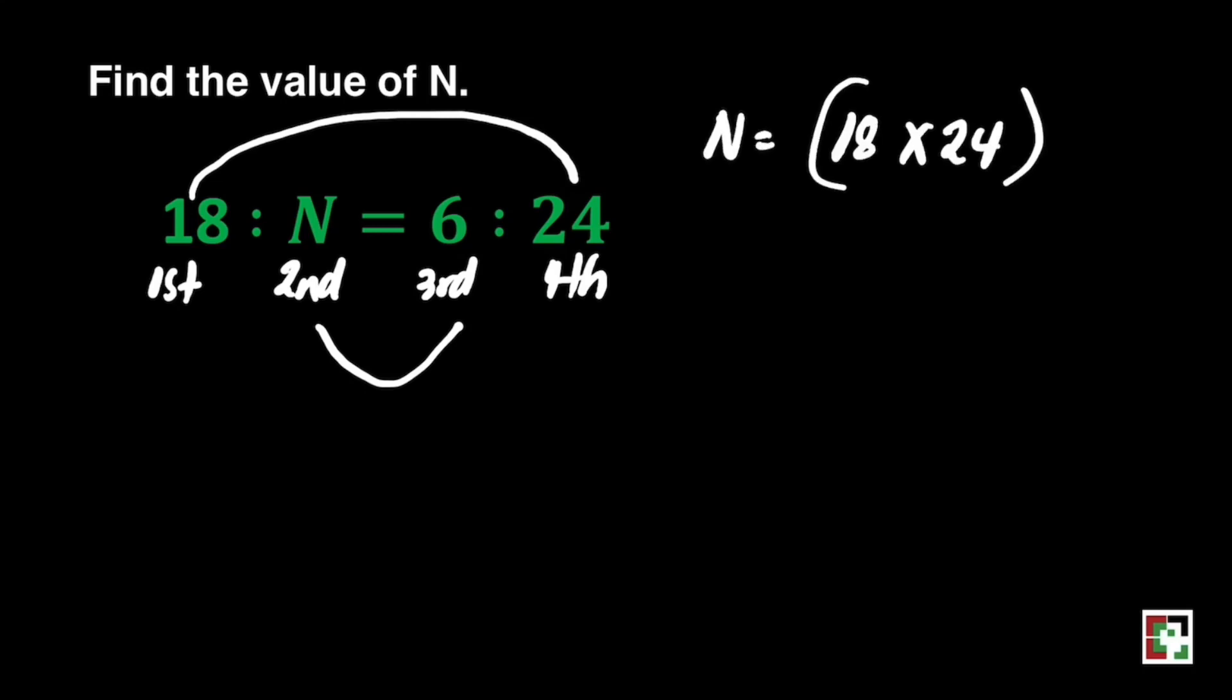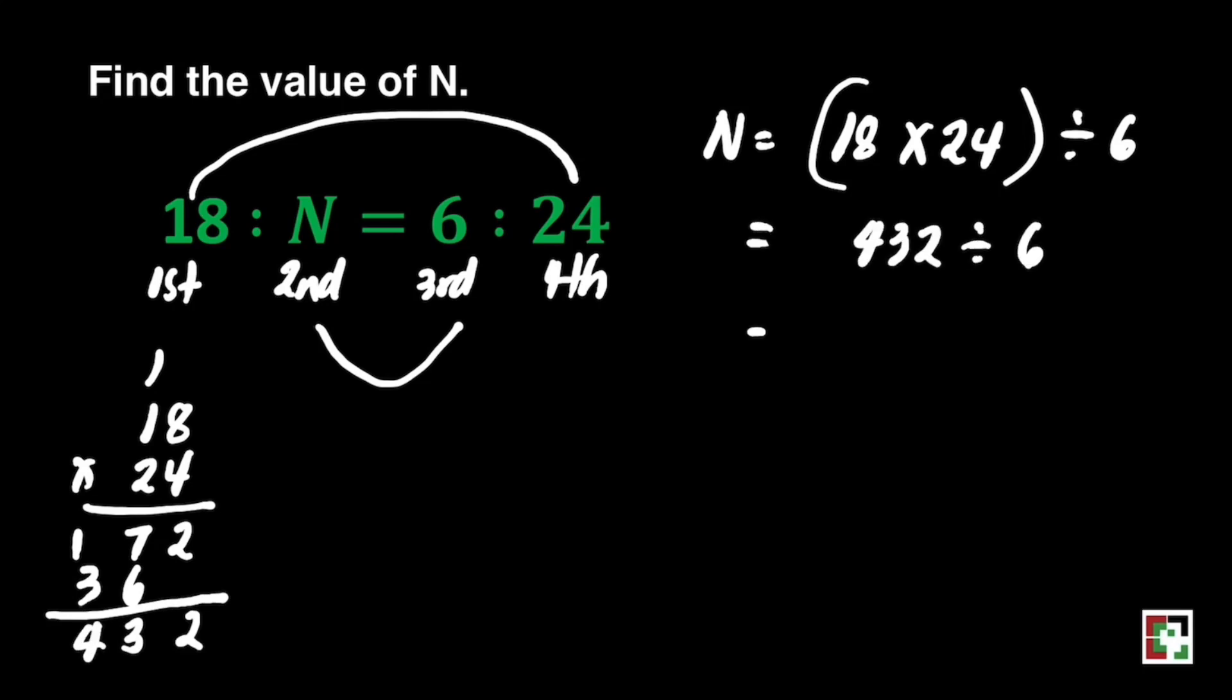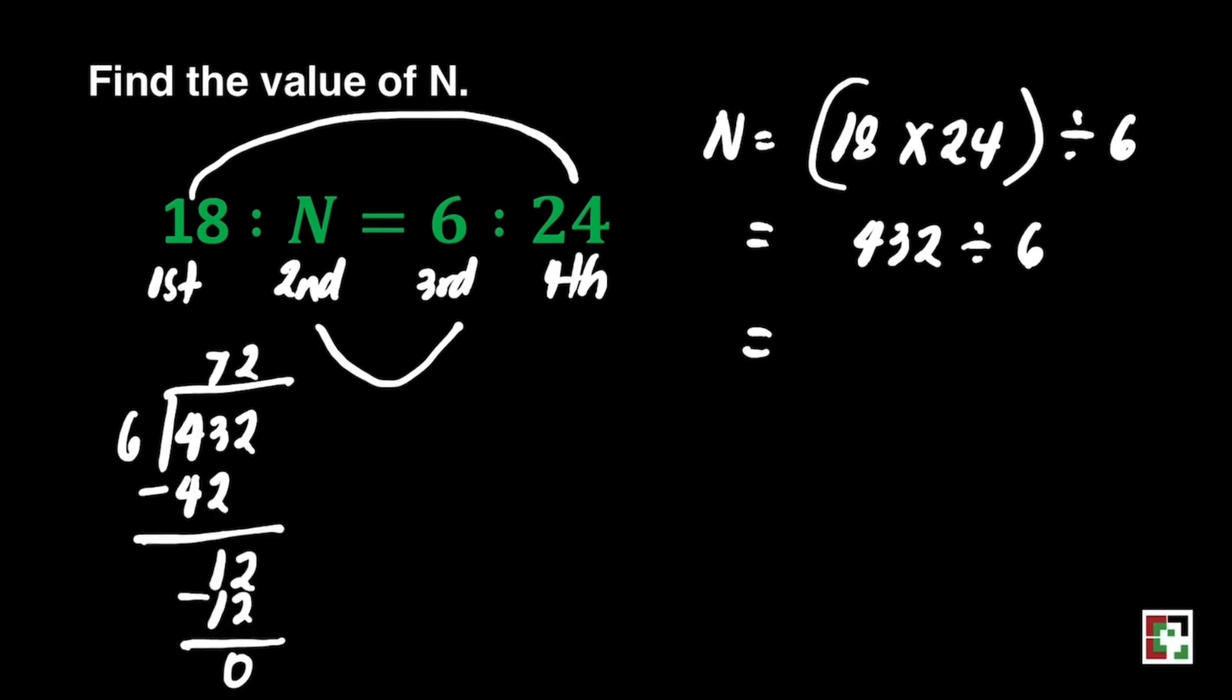18 times 24 divided by 6. So what is 18 times 24? Let's solve that. It gives us 432. This time, let's divide 432 divided by 6. The answer is 72. Our n is equal to 72.